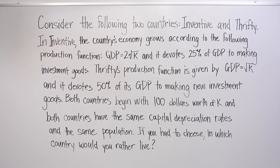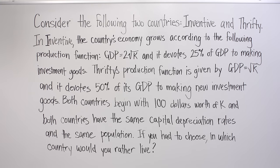Consider the following two countries, Inventive and Thrifty. In Inventive, the country's economy grows according to the following production function: GDP equals 2 times the square root of K, and it devotes 25% of GDP to making new investment goods. Thrifty's production function is given by GDP equals the square root of K, and it devotes 50% of its GDP to making new investment goods.